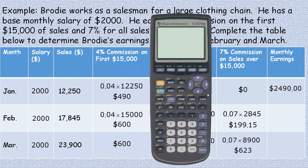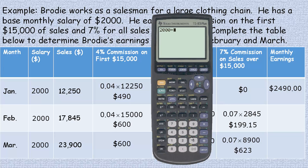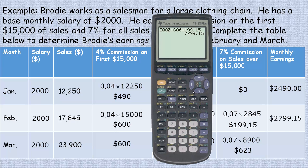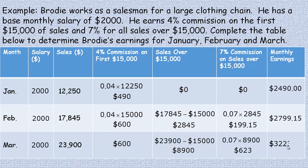For February: two thousand plus six hundred plus one hundred ninety nine dollars and fifteen cents equals two thousand seven hundred ninety nine dollars and fifteen cents — that's how much Brodie makes in February. For March, the only thing that changes is the seven percent portion becomes six hundred twenty three dollars, giving three thousand two hundred twenty three dollars in monthly earnings. That's how you calculate step commission, and that's the end of the tutorial.